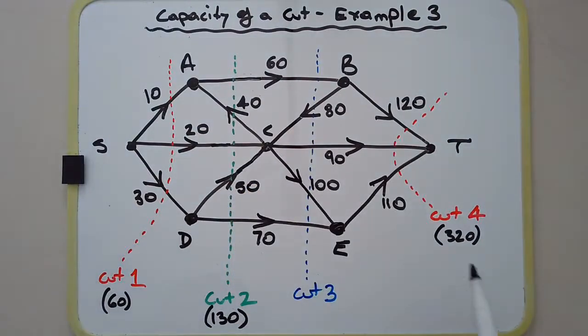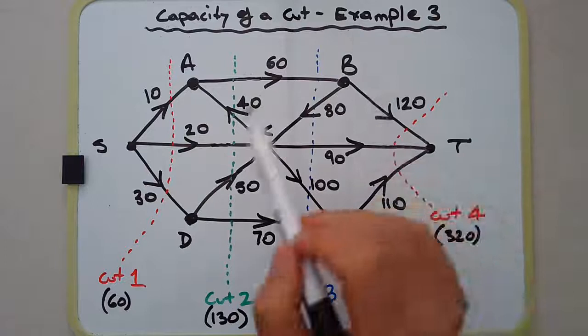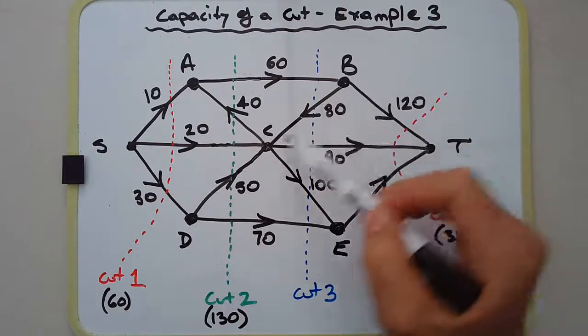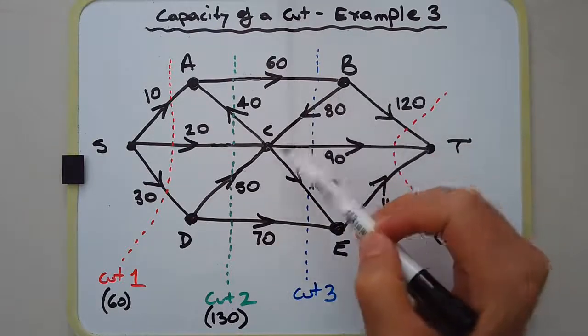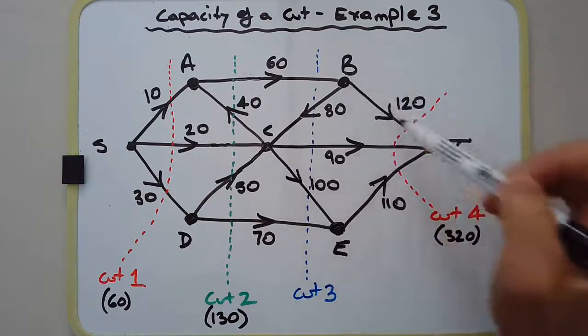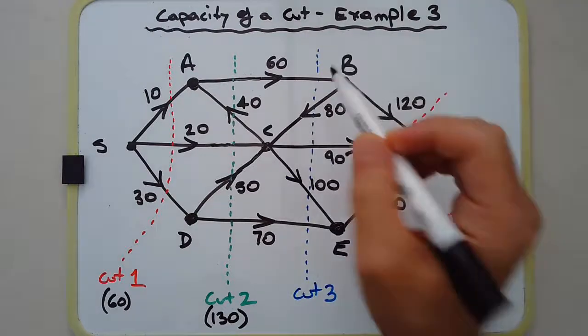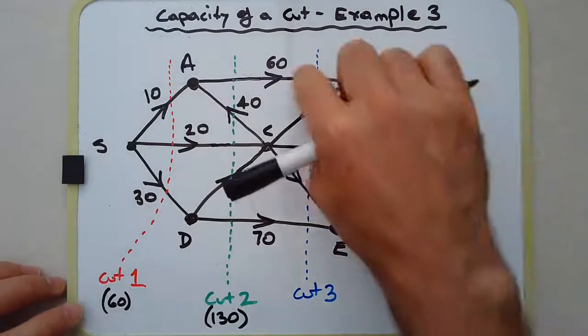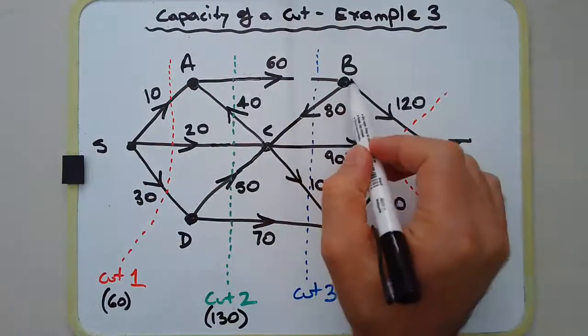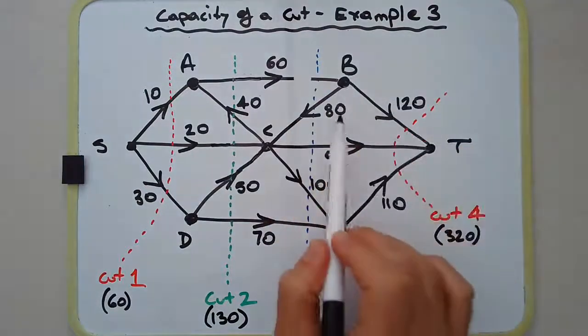What about cut number three? Hopefully you've determined that edge BC is in fact unnecessary. BC and BT are outflows of vertex B, so by cutting off the inflow, we've automatically cut off the outflow. We cannot include 80 in the calculation.